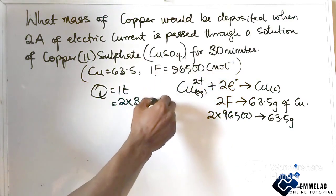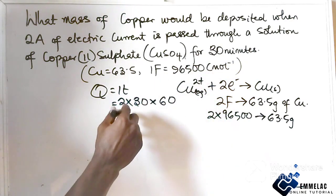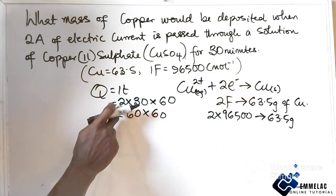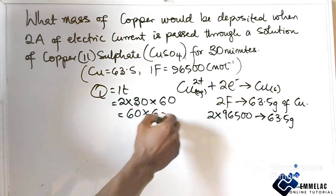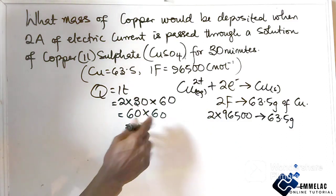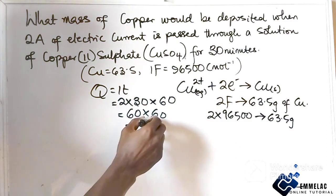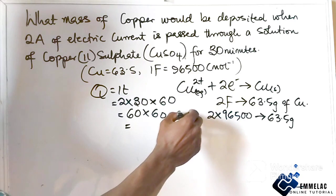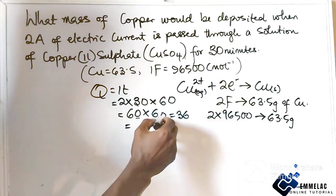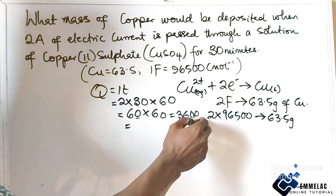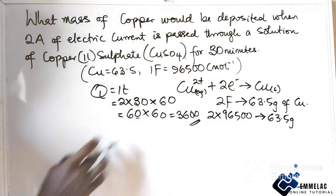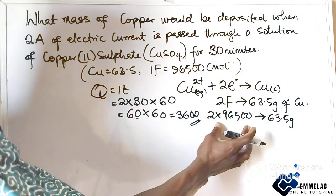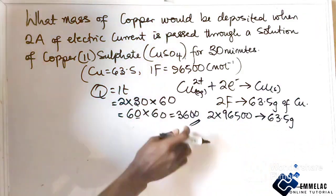Converting 30 minutes to seconds: 30 × 60 = 1800 seconds. Therefore, Q = 2 × 1800 = 3600 coulombs of electricity.